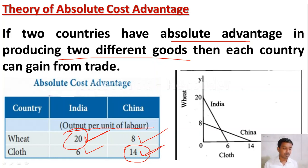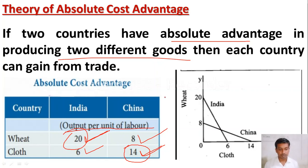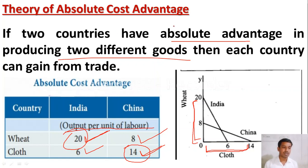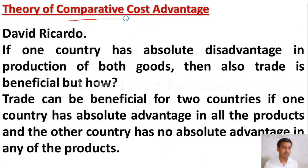In the table, India can produce 20 units of wheat and 6 units of cloth per unit of labor, while China produces 8 units of wheat and 14 units of cloth. India has absolute cost advantage in wheat production and China has absolute cost advantage in cloth production. So India should produce and export wheat, China should produce and export cloth, and trade between them is mutually beneficial.